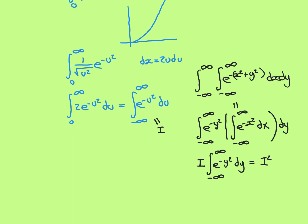Let's call the value of the Gaussian integral we're trying to find I, just for integral — some value we're trying to ascertain. What we can do is split the bivariate integrand into e to the negative x squared times e to the negative y squared, then do the inner integration with respect to x first. The e to the negative y squared part doesn't play any role in that inner integration, so it can be pulled out. We have the integral from negative infinity to infinity of e to the negative y squared, times the inner integral from negative infinity to infinity of e to the negative x squared dx, then dy.